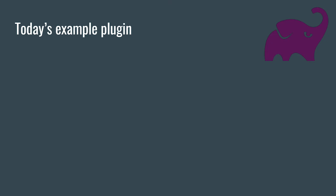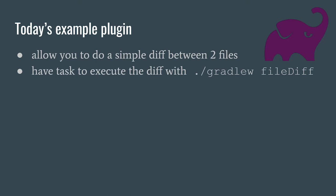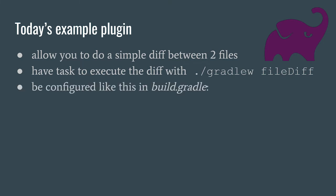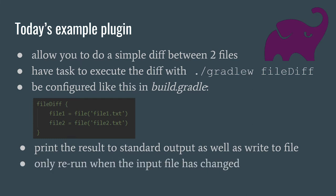In terms of today's example plugin, it's going to be a plugin that allows you to do a simple diff between two files — just comparing file size. It will expose a task called file diff, and you'll be able to configure this plugin in the build.gradle by defining a file diff configuration block specifying file1 and file2. When you execute the task, it will print the result to standard output and write a file. The plugin will only rerun when the input file has changed. And as good developers, we will have a test.